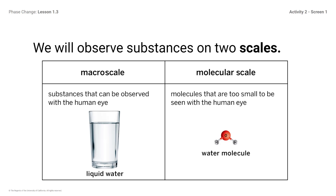We will observe substances on two scales. Macroscale: substances that can be observed with the human eye, like liquid water. Molecular scale: molecules that are too small to be seen with the human eye, like a water molecule. Scale is a word that scientists use when comparing the relative sizes of objects or substances, such as the size of a molecule compared to the size of a human consisting of molecules.